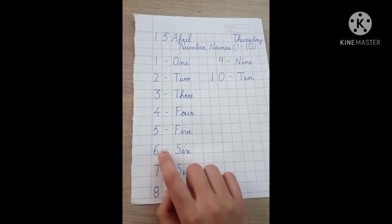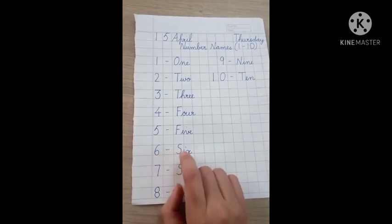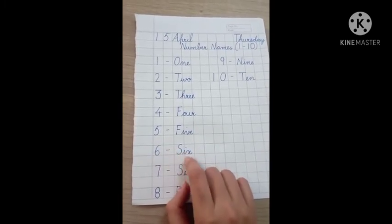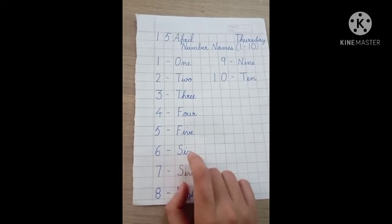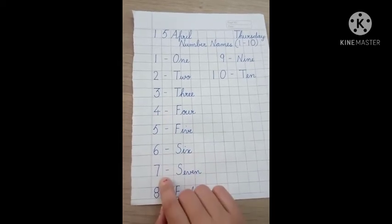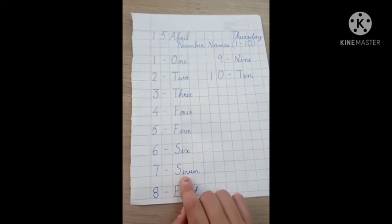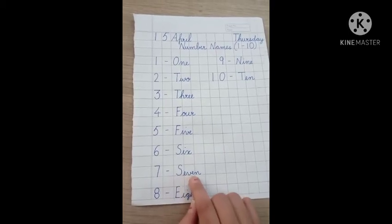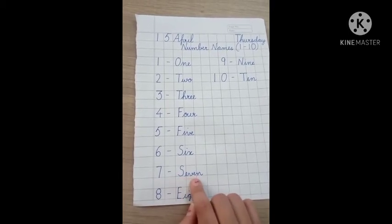6. 6 in number, hyphen, S capital, I small, X small. S, I, X, six. 7. S capital, E small, V small, E small, N. S, E, V, E, N, seven.